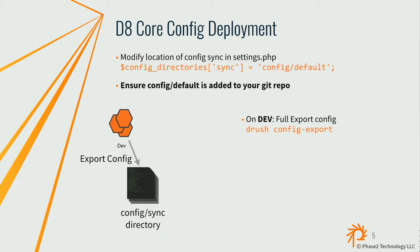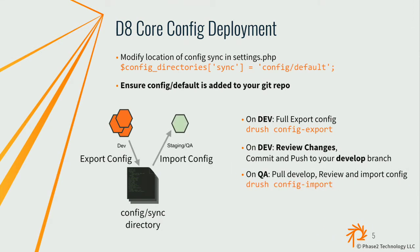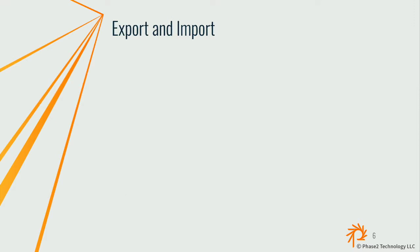On your development machine, using Drush — and if you're a Drupal Console user there are similar commands — you run config export, which takes all the config from your database and writes it as YAML files into that sync directory you set up. Then you push that to your Git repo, review your changes, push that up. On your QA server, you do config import, which takes that same directory you've just pulled from Git and loads that config into your database. You've just moved your config from dev to stage, and you do the same thing from stage to prod.